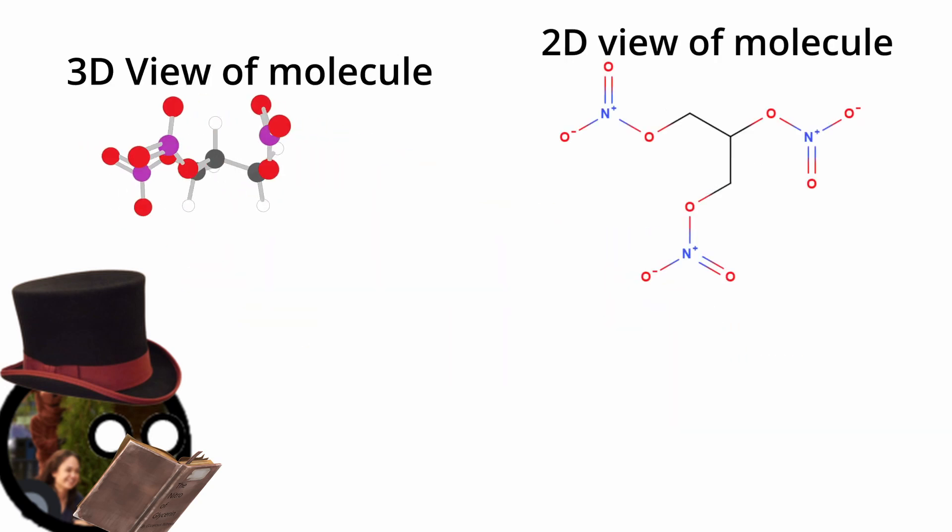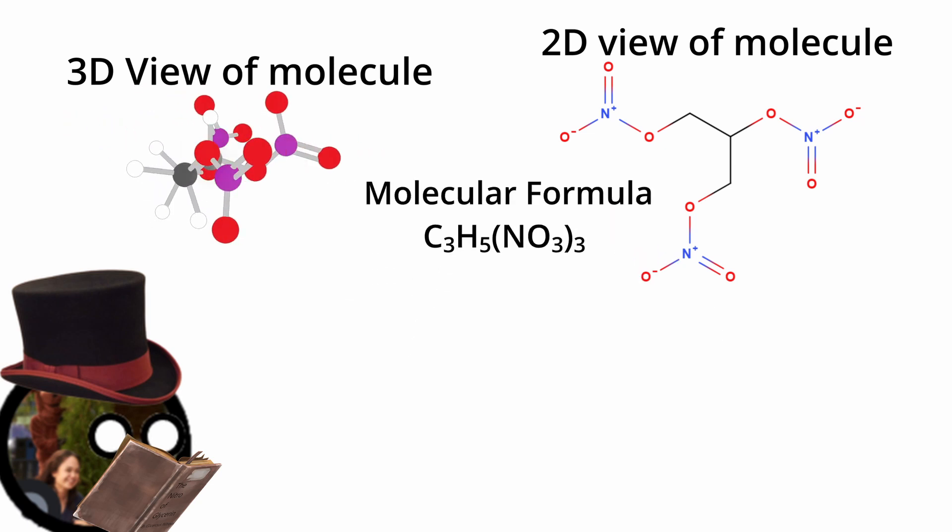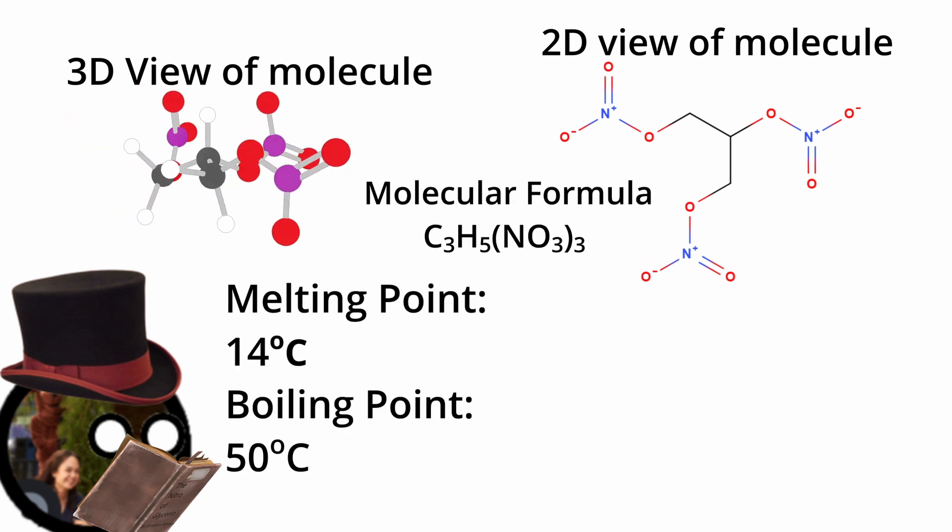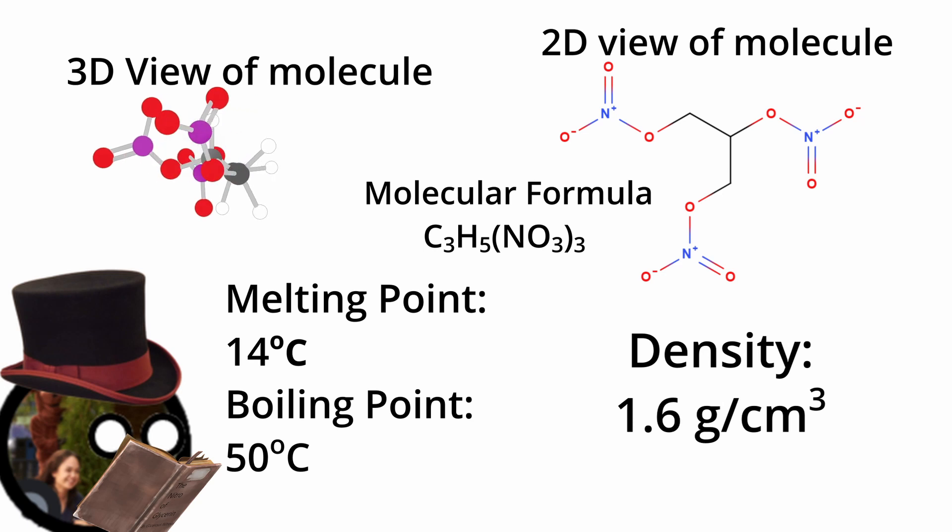And has a formula that looks like this. It has a melting point of around 14 degrees and a boiling point around 50 degrees, with a density of around 1.6 grams per cubic centimeter.